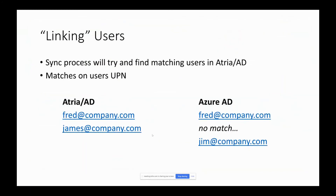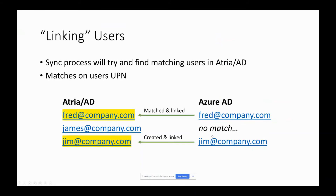There is a linking user process. If the tenant exists in Atria and the Office 365 tenant already exists, you'll have users that match on both sides. The sync process will try to find matching users between the tenants. For example, if Azure AD has Fred and Jim at company.com, and Atria has Fred and James at company.com — the matching process would match and link Fred since he exists on both sides. It would create Jim in Atria since he didn't exist there. And James in Atria would be left as-is with nothing linked in Azure AD.